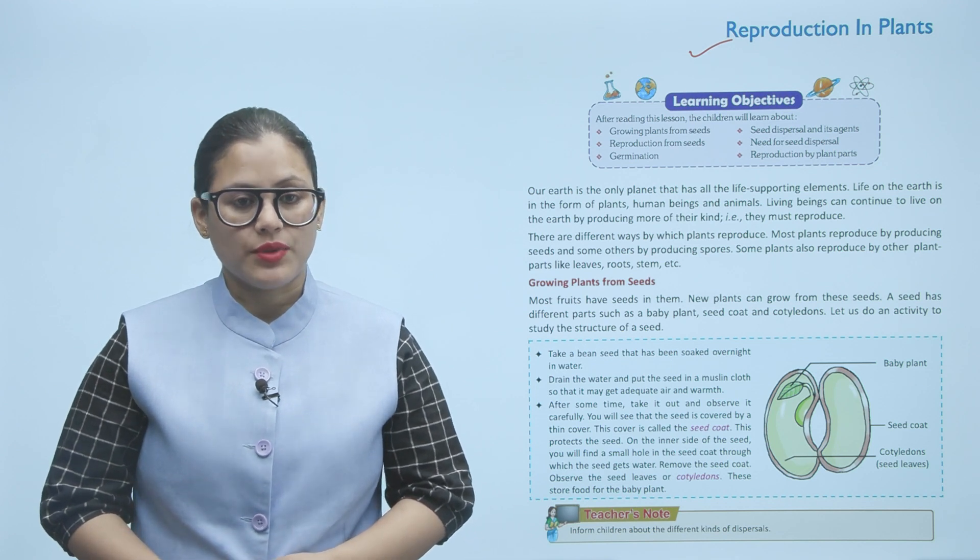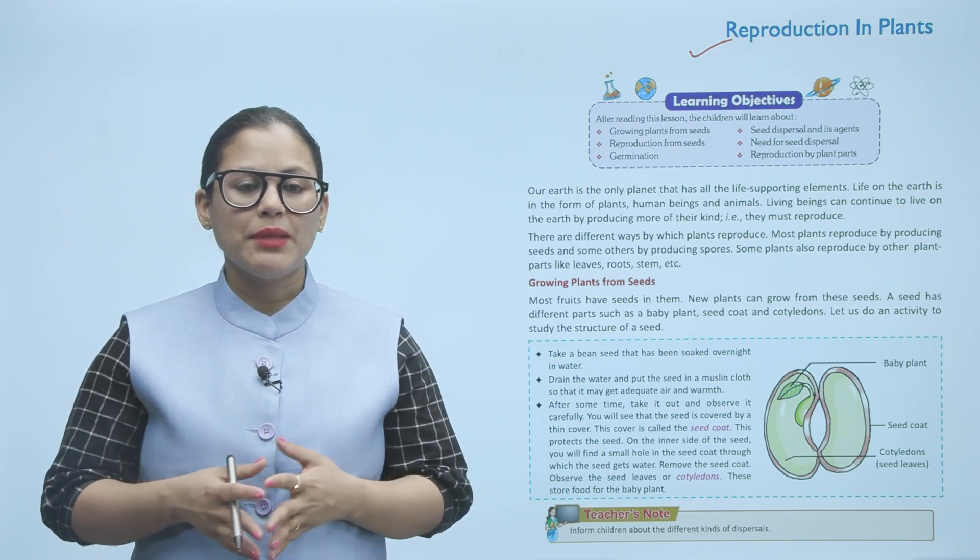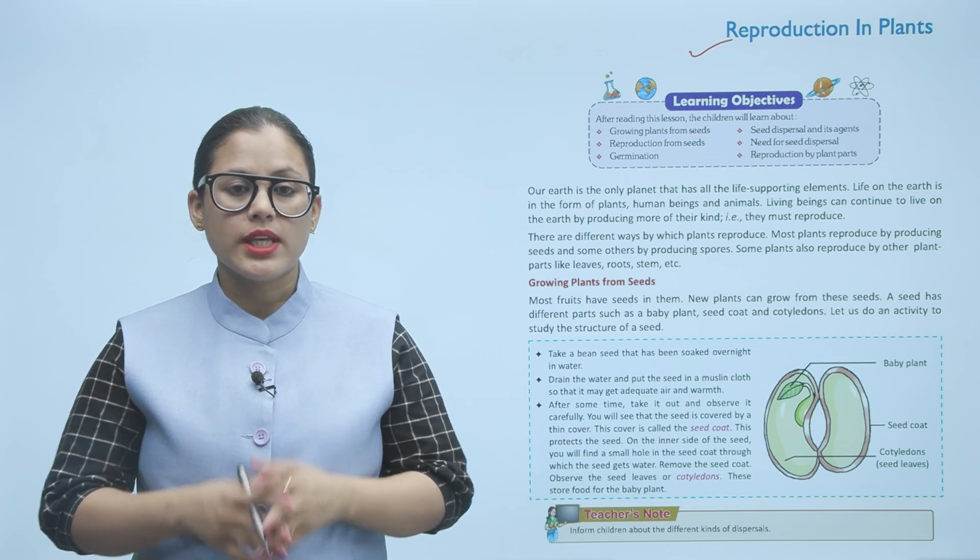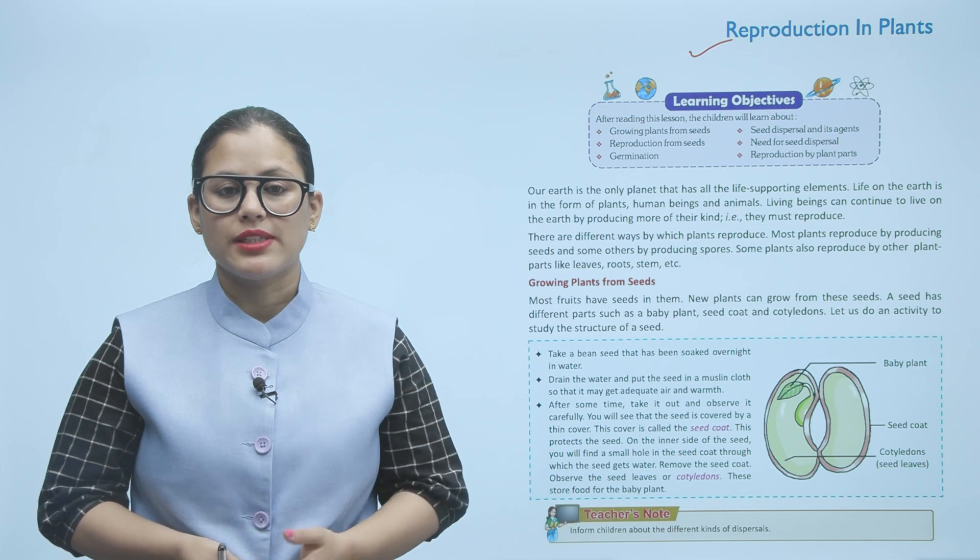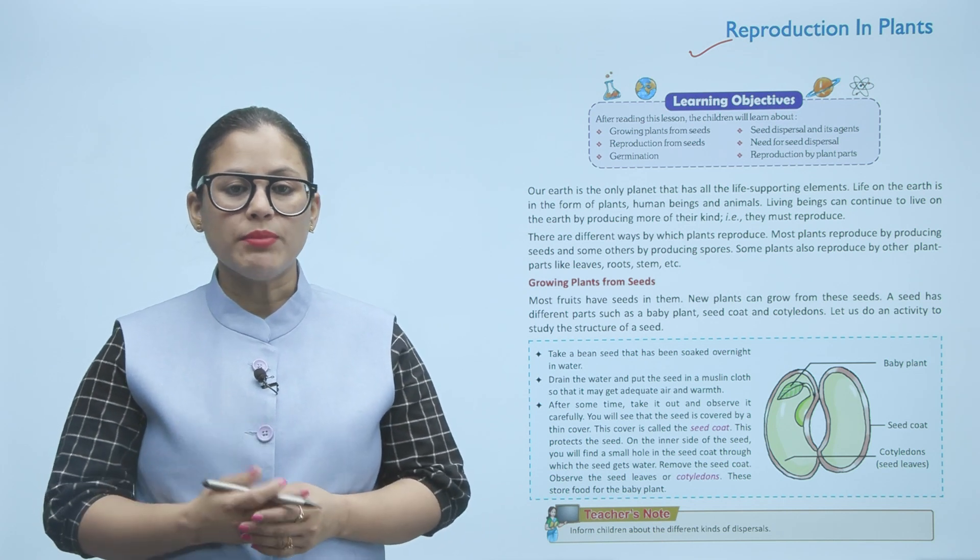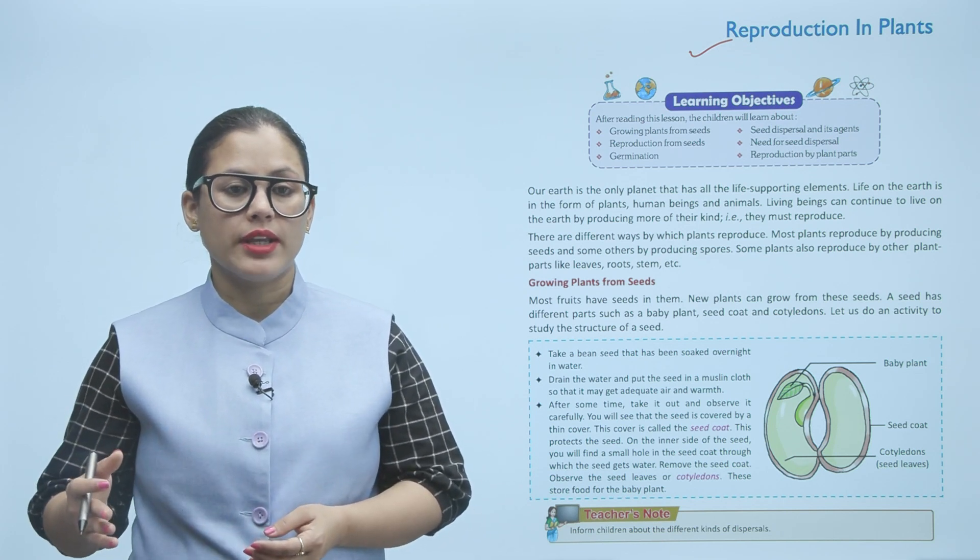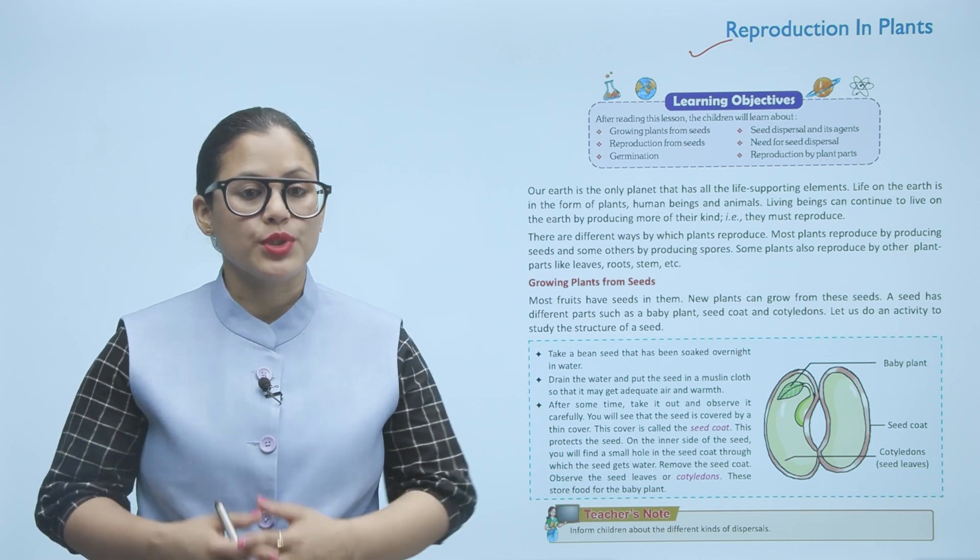There are different ways by which plants are reproduced. Most plants reproduce by producing seeds and some others by producing spores. Some plants also reproduce by other plant parts like leaves, roots, stem, etc.